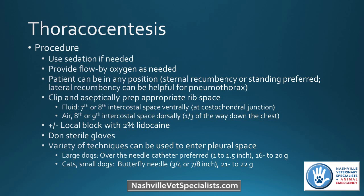A local block is usually not needed for thoracocentesis, but for a large dog with thick skin, you certainly can. Put on sterile gloves; technique depends on the patient. For large dogs, I usually use an over-the-needle catheter, one to one-and-a-half inch, 16 to 20 gauge depending on size. For cats and smaller dogs, a butterfly needle can be used — usually 21 to 22 gauge.